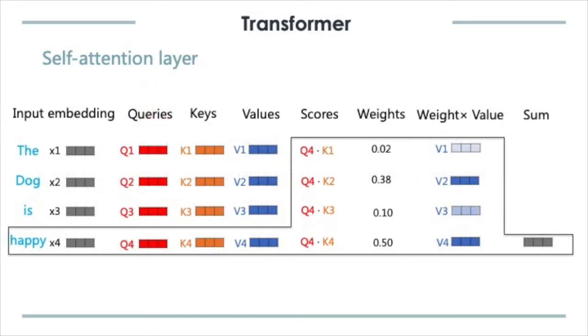This is a quick example of how data is processed in a self-attention layer. Assume the input is the sentence, the dog is happy. The word embedding of this sentence serves as the input of a self-attention layer, and it generates Q, K, and V for each word. When processing the fourth word happy, for example, it uses happy's query and all keys to get the score, and then get the weighted value of each word, and finally do summation to generate the final output.